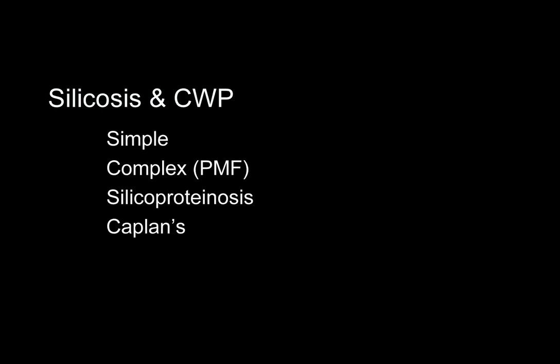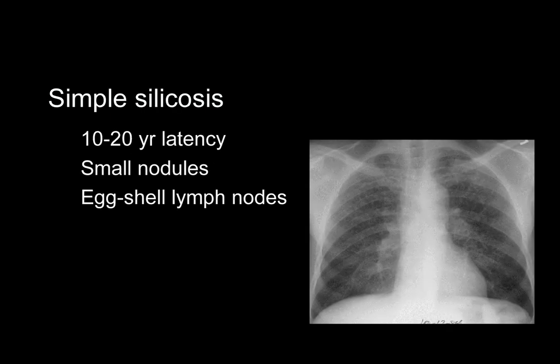Now let's examine the rounded dusts using silica as our prototype. Silica is the most common element in the Earth's crust; all mining operations, whether iron or coal, contain silica. Sandblasting and foundry work are common industries for silicosis. Generally, simple silicosis is asymptomatic and is seen in those workers exposed to relatively low levels of dust; however, simple silicosis is a progressive disease even after removal from the dusty environment. Differential diagnosis for an upper lobe nodular pattern includes the granulomatous diseases, tuberculosis, sarcoidosis, Langerhans cell granulomatosis, and farmer's lung.